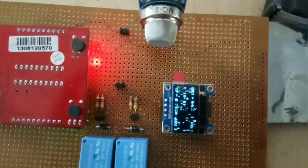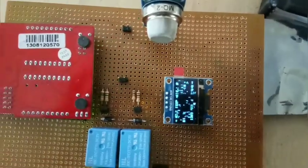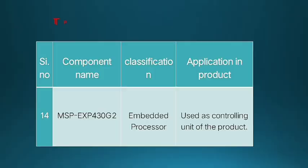These values can also be accessed from any place using a mobile phone through IoT. The Texas Instruments component we majorly use is the MSP430G2 embedded processor, which acts as the control unit.